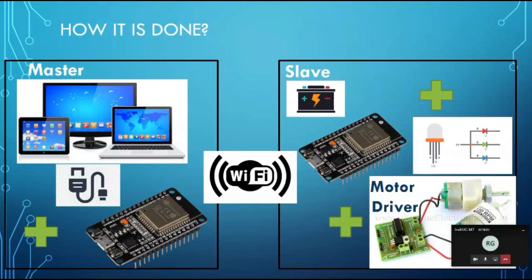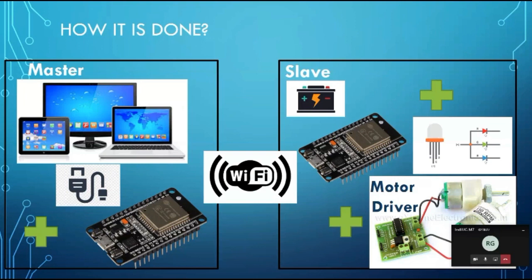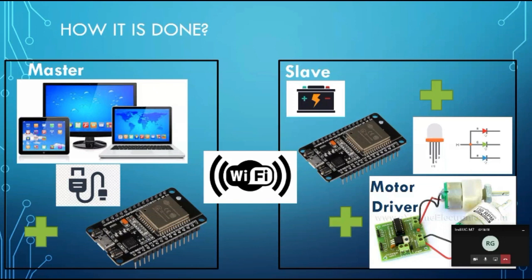The concept is simple — one master, one slave. The master has a computer where the ESP32 master is connected. Data from the master computer is sent to the ESP32 master Wi-Fi device, and the same data is passed to the slave over Wi-Fi via hotspot. The slave receives data and performs actions like moving a motor or glowing a light.